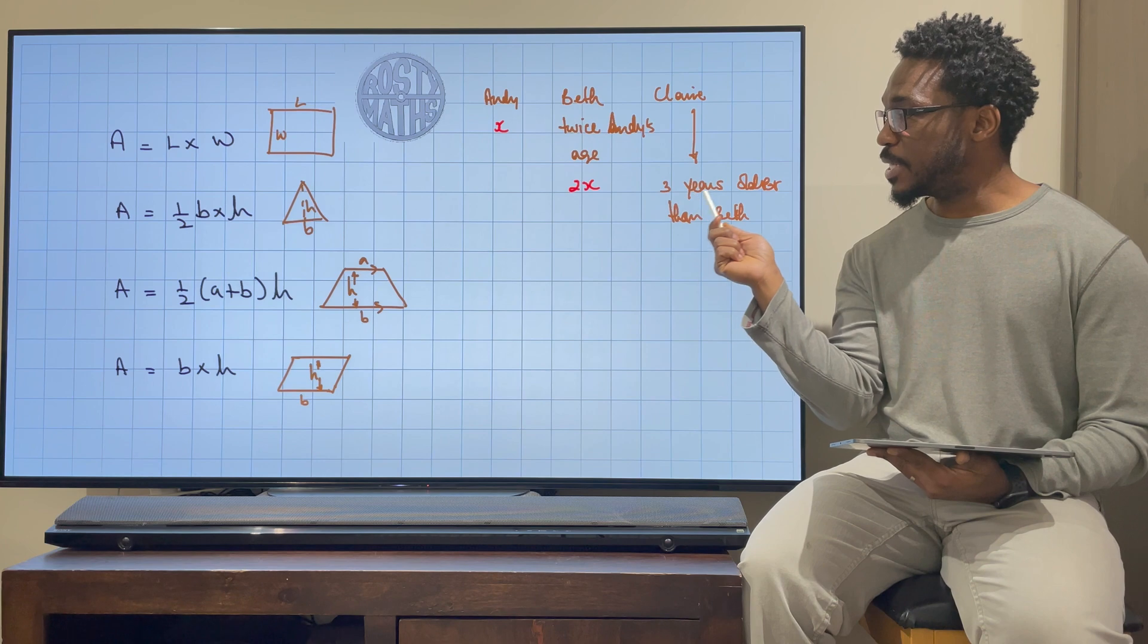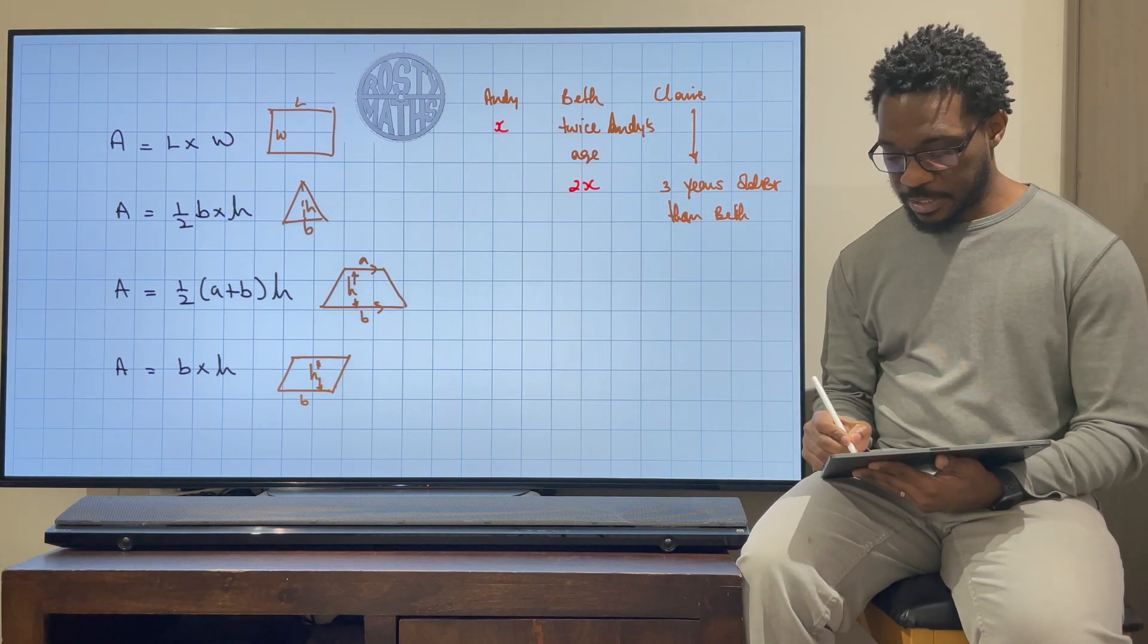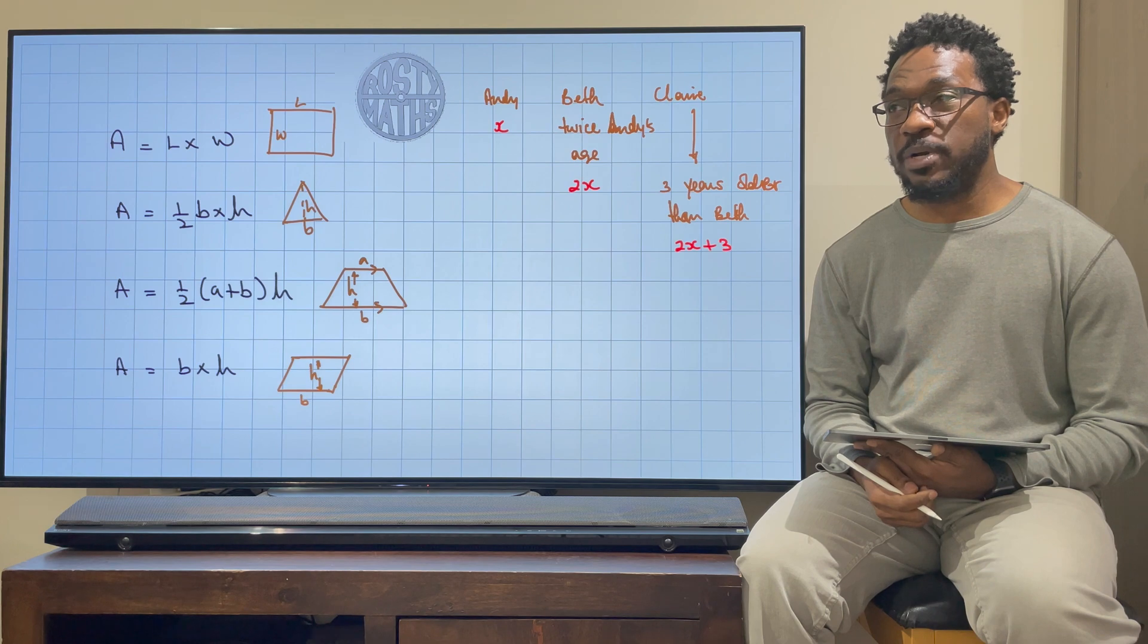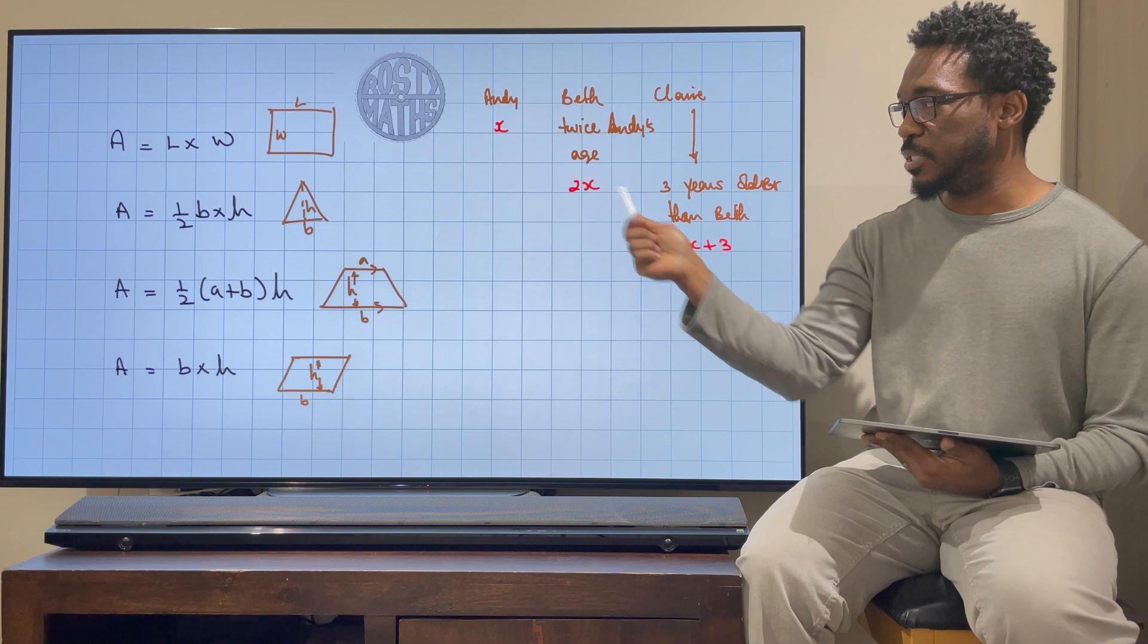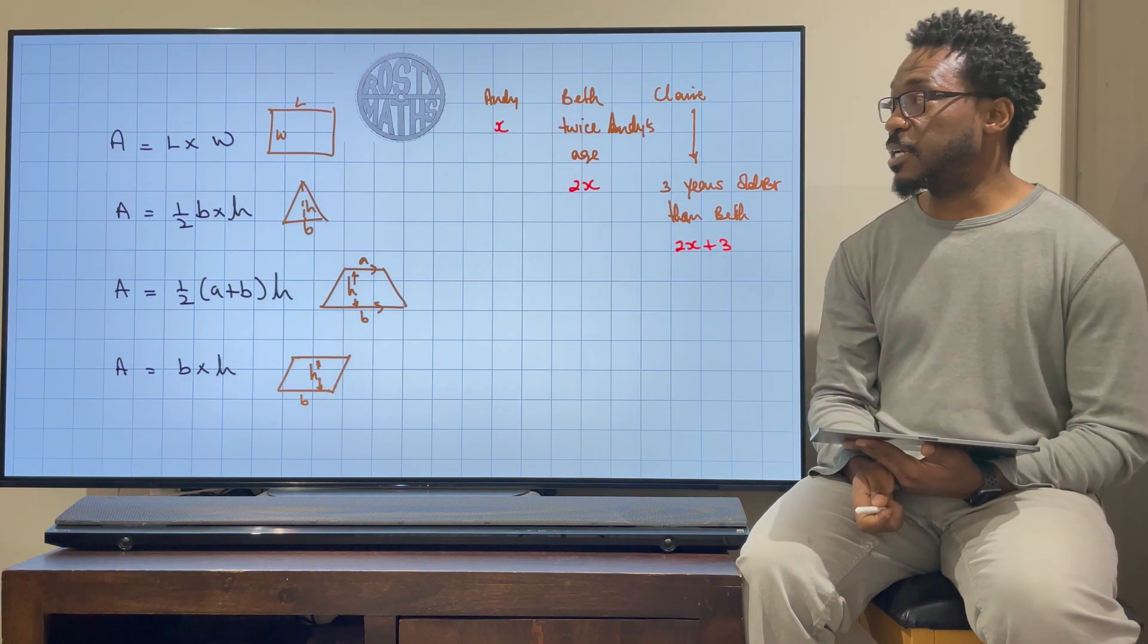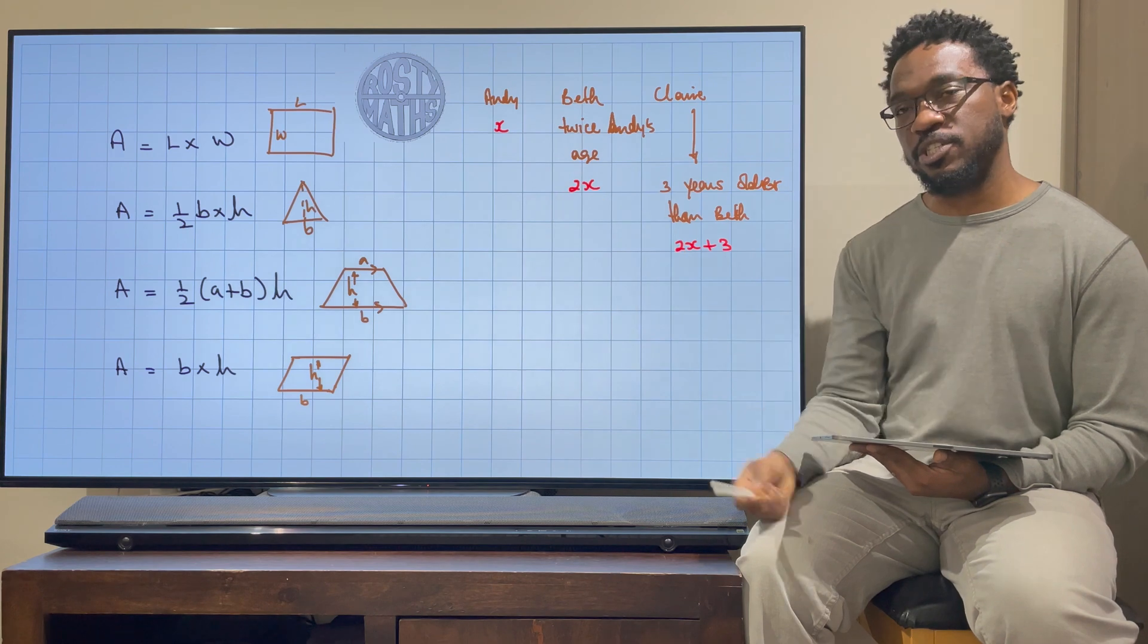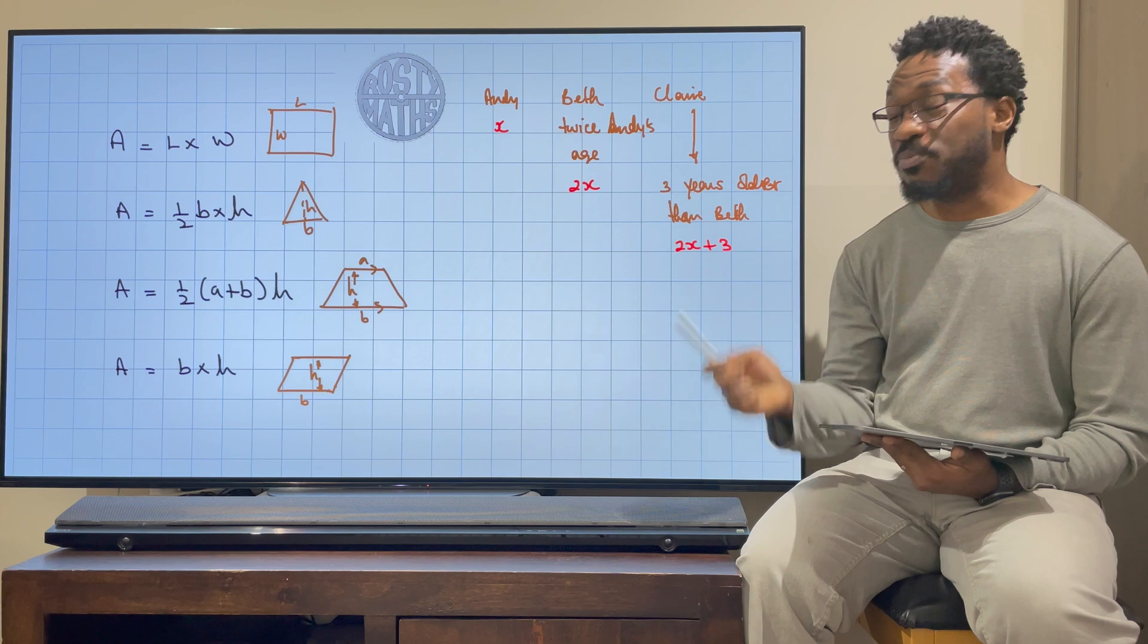Now if Beth is twice his age, then she's going to be two times X. Okay, and then if Claire is three years older than Beth, it means she's the same age as Beth plus another three. So she's going to be Beth's age plus another three. And that's it. So basically I've now worked out a formulae—three different formulas, but these are the two main ones—to work out anybody's age at any given point in time. So let's say for example, we know that Andy is 10 years old. We can use that information to work out Beth's age because she'll be 20, and we know that Claire will be 23, and so on. So really, really important about writing formulae.